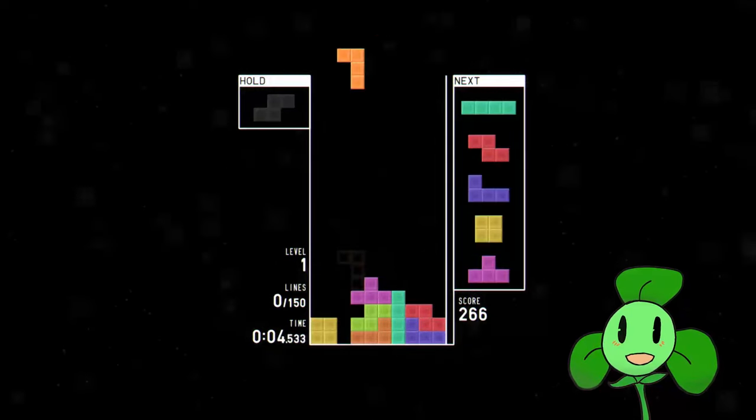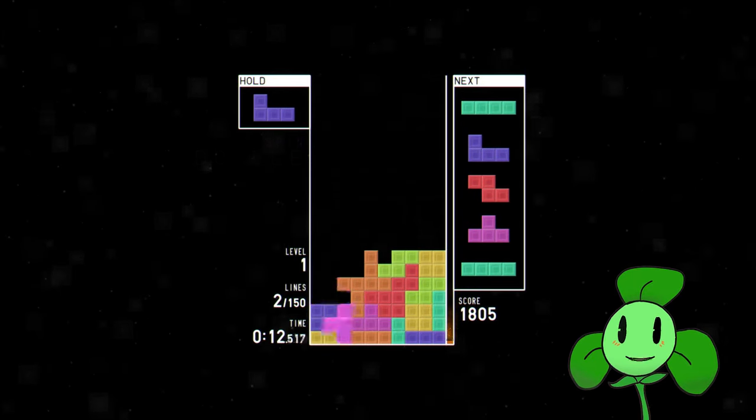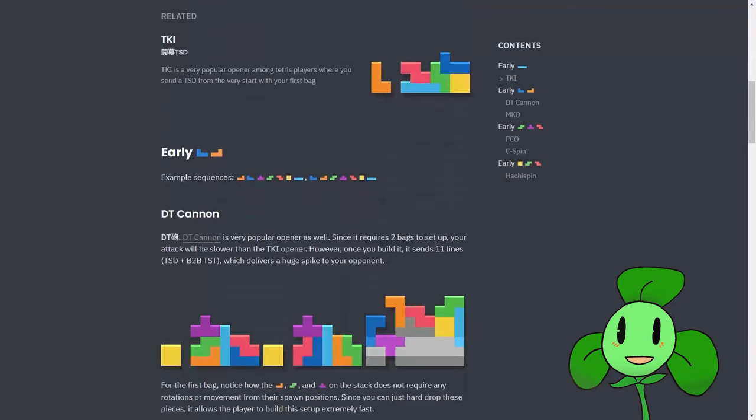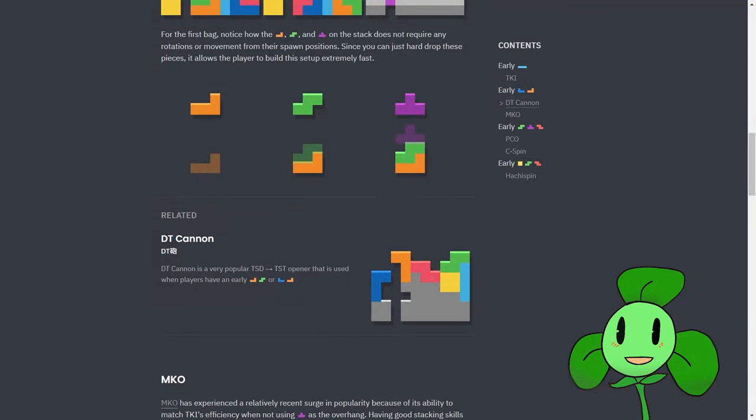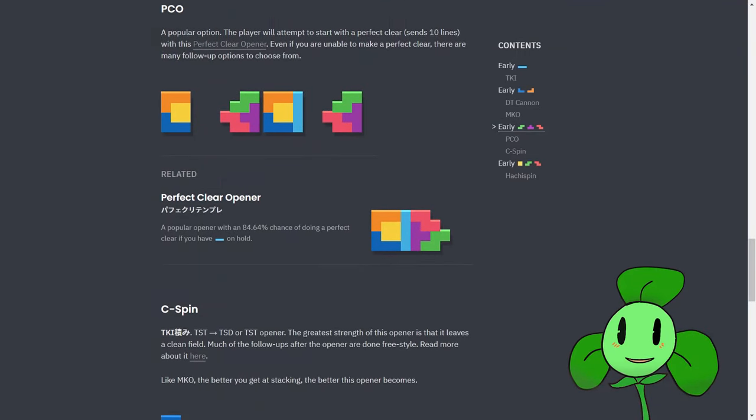There's also DT Cannon, a longer opener that sends twelve or more lines. A bit risky, but more rewarding. If you want to learn more about openers, you can go to four.lol and study these openers. Try not to learn too many, which would focus your efforts on getting better at the game.